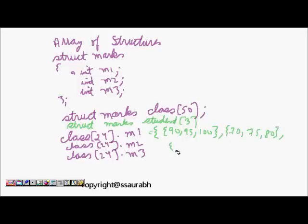And next is 50, 90 and 85. So this way I can even initialize an array of structures where each of the parentheses represents one of the members. So this is for defining array of structures.